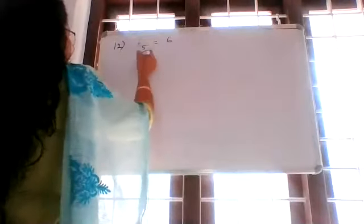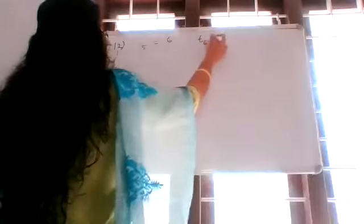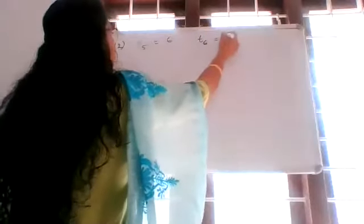Exercise 10A, question number 12. The fifth and sixth terms of an AP are respectively 6 and 5. Find the 11th term of the AP. So, fifth term T5 is equal to 6 and T6 is equal to 5.